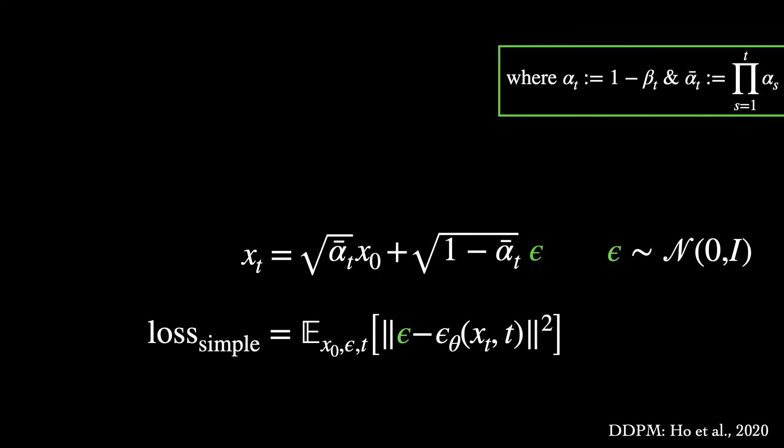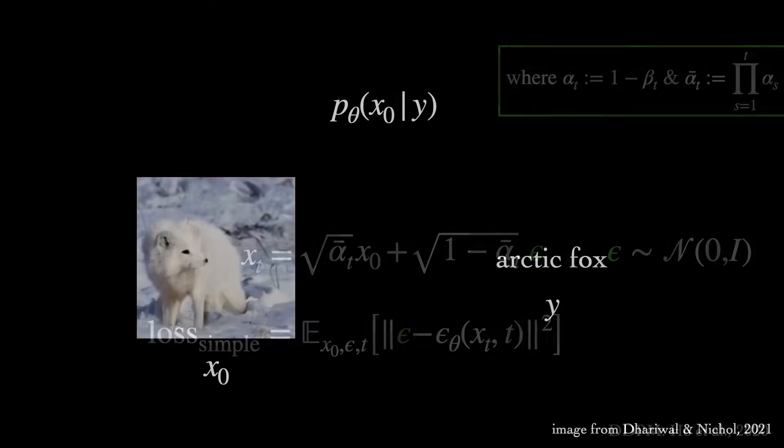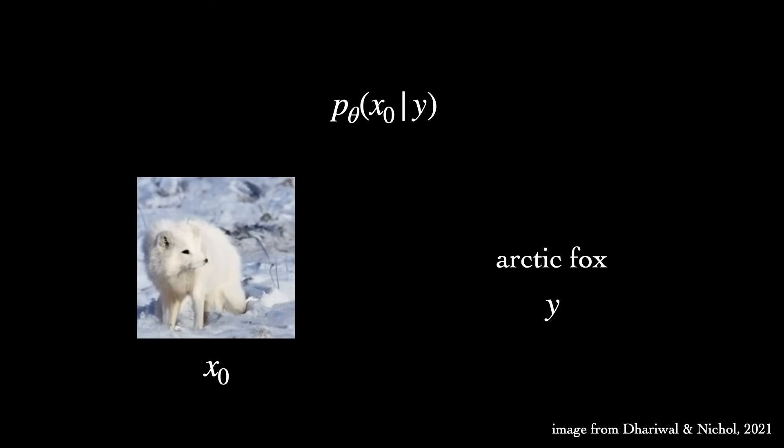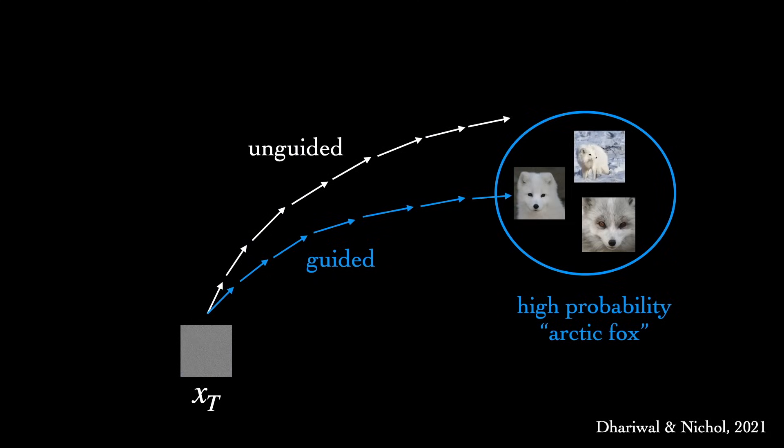Like other generative frameworks, diffusion models can be made to sample conditionally given some variable of interest, like a class label or a sentence description. One way to do this is to just feed the conditioning variable Y as an additional input during training. In theory, the model should learn to use Y as a helpful hint about what it should be reconstructing. In practice, some work has shown that further guiding the diffusion process with a separate classifier can help.